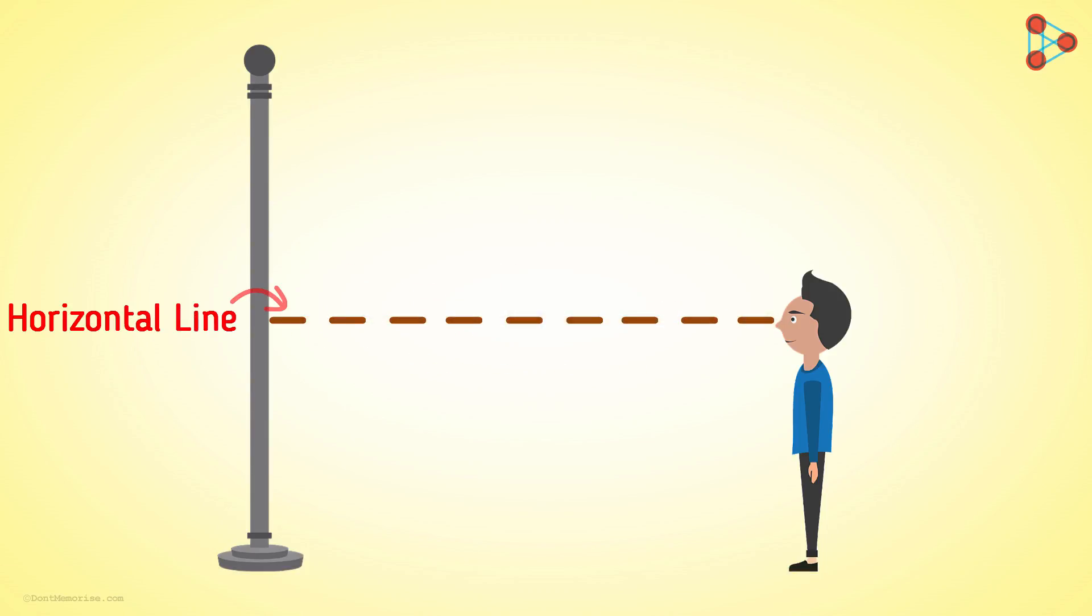Now if the person is looking at the top of the pole, what would be the line of sight in this case? The line drawn from the eye to the top of the pole will be the line of sight.